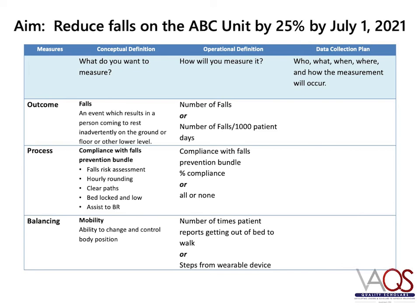This measures grid is taken from the VAX QI template using the IHI recommended framework for measures. Note that each measure has a conceptual definition that tells us what we want to measure. There are two examples of operational definitions for each conceptual measure, showing that you have multiple choices of how you can operationalize the measure you identified.